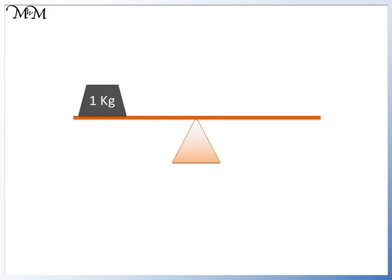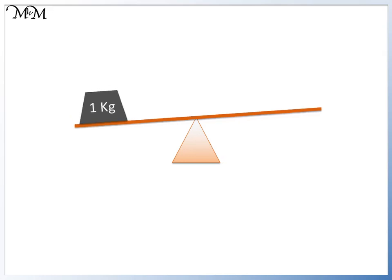Here is a 1kg mass which is placed at one end of the scales. The heaviest end will move down. Since there is nothing at the other end, the 1kg mass moves down.